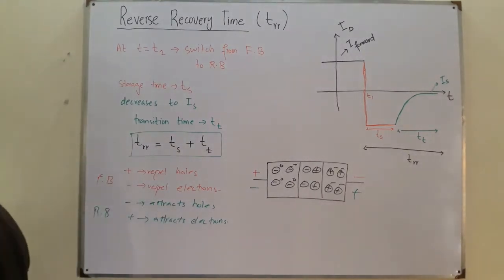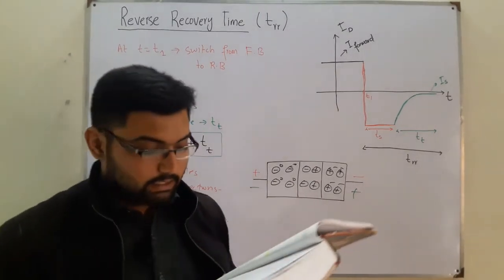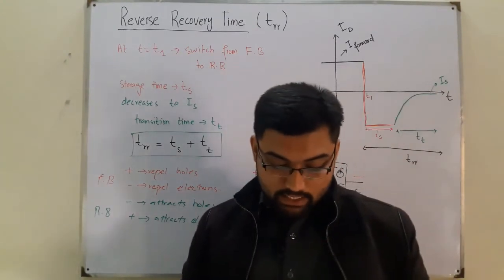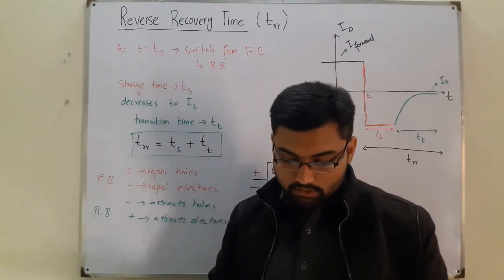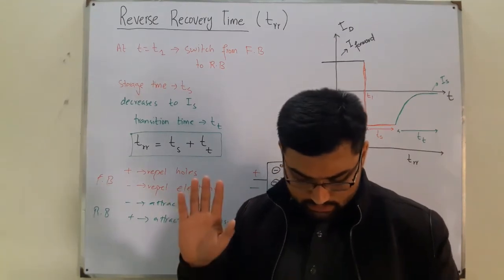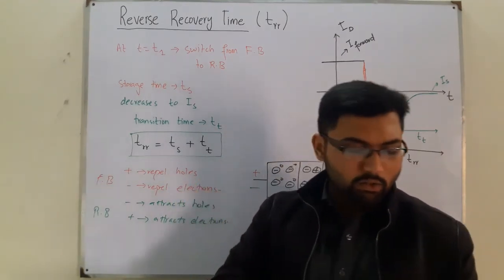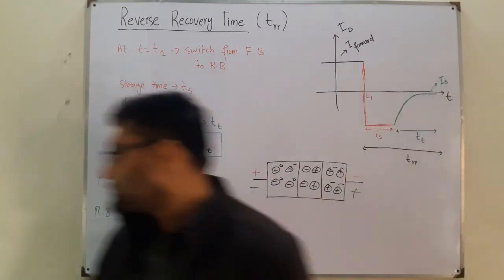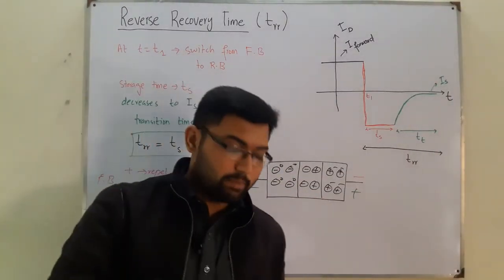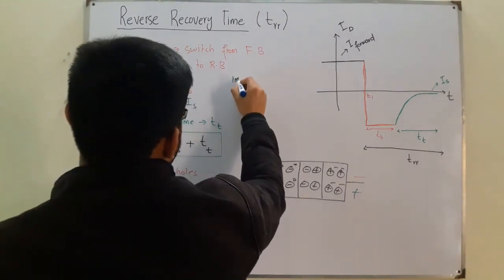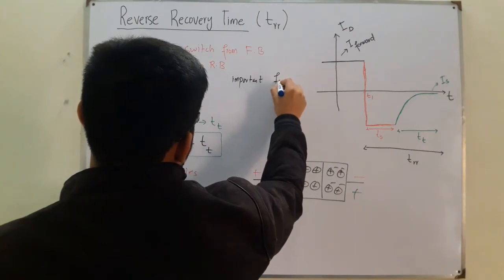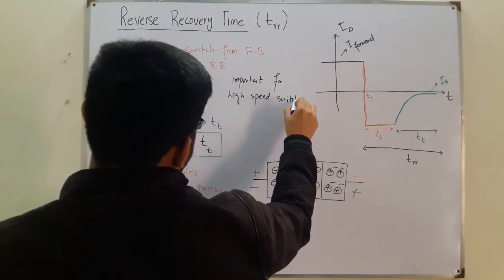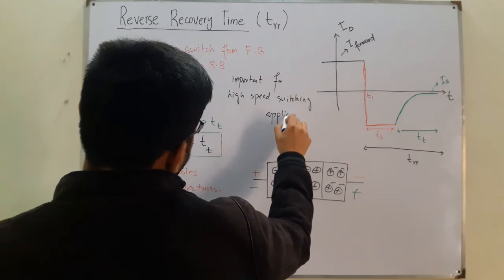This TRR value is provided on the specification sheet of the diode along with other properties. The TRR is normally neglected, but it is important for high-speed switching applications — only in high-frequency applications is it significant.